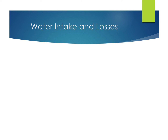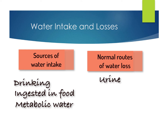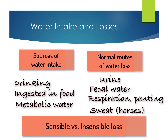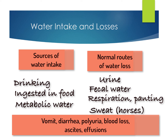Now let's look at water intake and water losses in the body. Normal sources of body water include drinking and eating, and water that results from normal metabolic processes. Normal body water losses result from urination, water in feces, water loss through the lungs in regular respiration or excessively in panting in dogs, and sweating — not for all species, but this is true for horses. A sensible loss is something we can measure, such as urine. An insensible loss is fluid loss that's not measurable, such as respiratory water loss. Abnormal fluid loss results from vomiting, diarrhea, polyuria, hemorrhage, or fluid loss in body compartments such as with ascites or effusions.